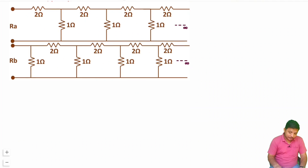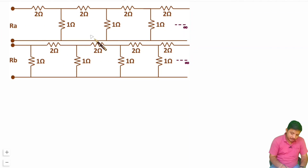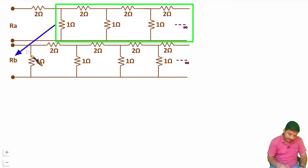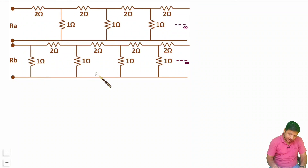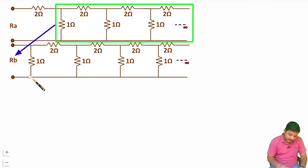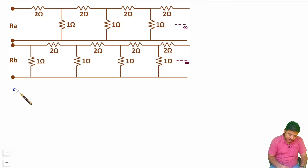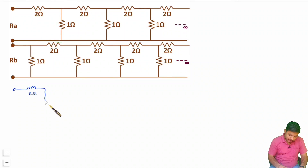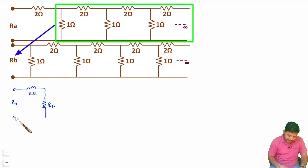If you observe these two circuits, you see they are almost the same. Now observe that with RA, this part goes towards infinity, and that is the equivalent of RB. So if I substitute the circuit of RB into RA, I can replace RB over here. So one solution could be: this 2 ohm in series with RB gives RA. This is one solution.